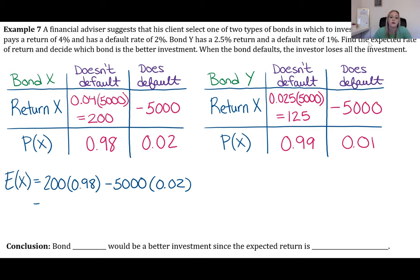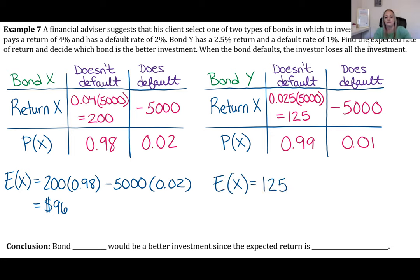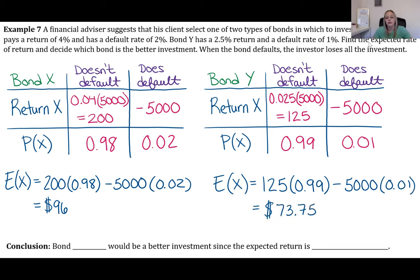Bond X has the higher positive expected return of $96 versus $73.75, so Bond X is the better investment.